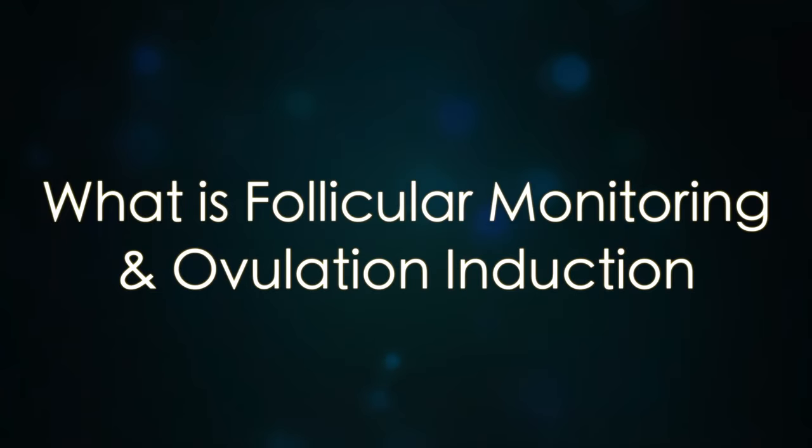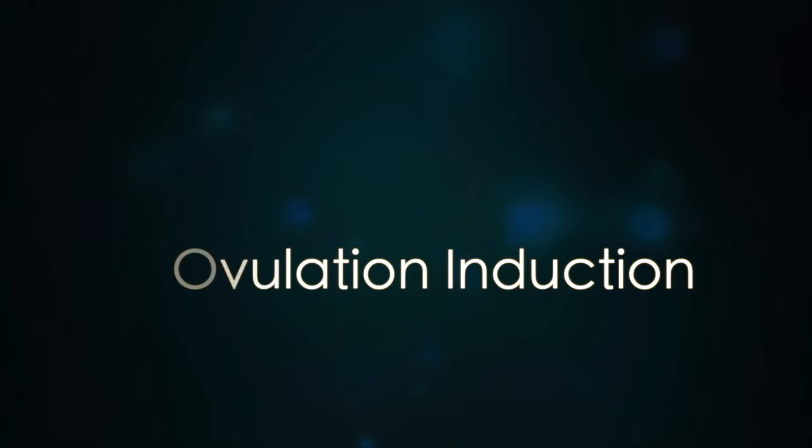Ovulation Induction means that drugs are given so that the egg can become good. In a normal way, one ovary makes one egg in a cycle. But with ovulation induction, eggs that have not developed can be stimulated to develop.